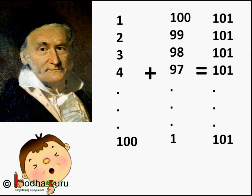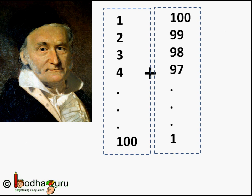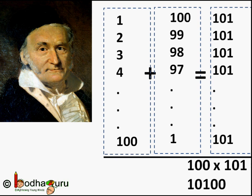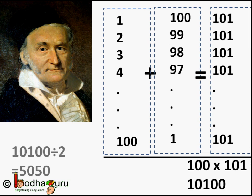Continuing till 100 + 1 = 101. In his two lists there were 100 rows, so the total sum of both lists equals 100 × 101 = 10100. The sum from 1 to 100 will be half of that, because each term is getting counted twice. So the sum from 1 to 100 equals 10100 ÷ 2 = 5050. That's how he was able to calculate it very fast while he was in elementary school — amazing!